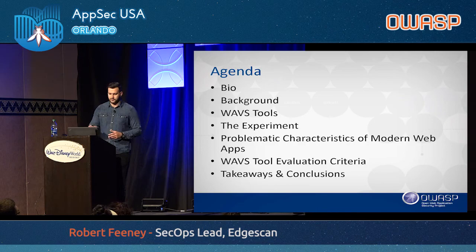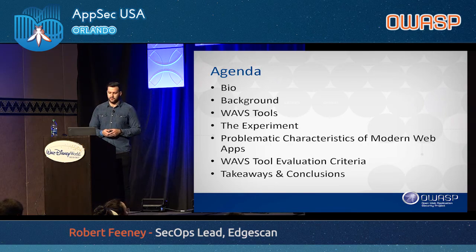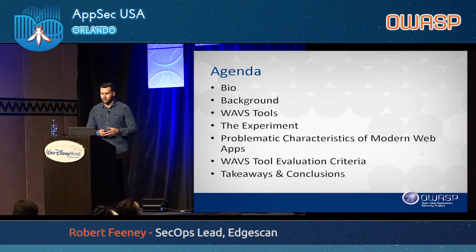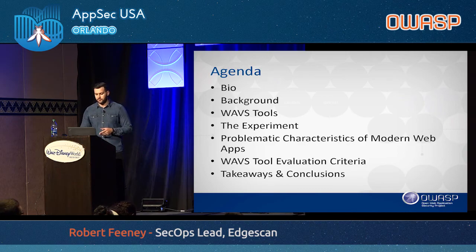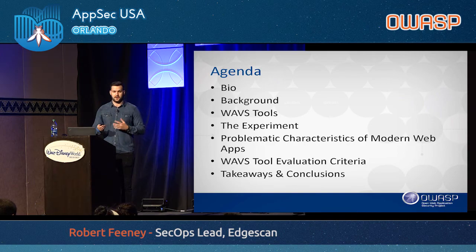I'll just run through a bit of an agenda. We'll go through a bio about myself, my work experience and my career to date. We'll detail some background and the latest figures to get a sense of what's happening in AppSec. We'll have a brief introduction into web application vulnerability scanning tools, also known as WAVs — how they work and the different types of data they produce. We'll speak about the experiment from my master's thesis to evaluate the tools and identify differences between them. We'll then speak about the problematic characteristics of modern web applications, the web application vulnerability scanning tool evaluation criteria, and then we'll have the takeaway and conclusions.